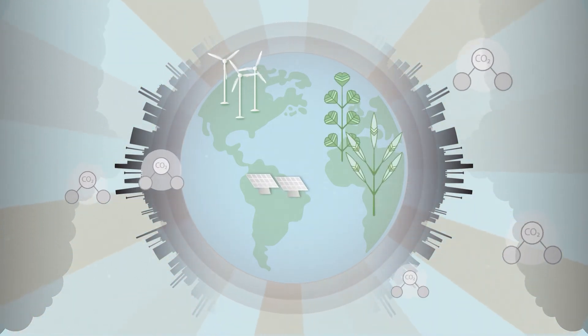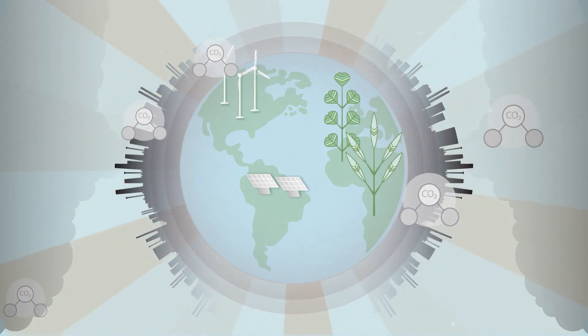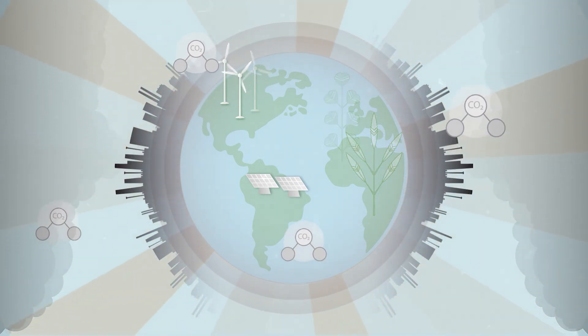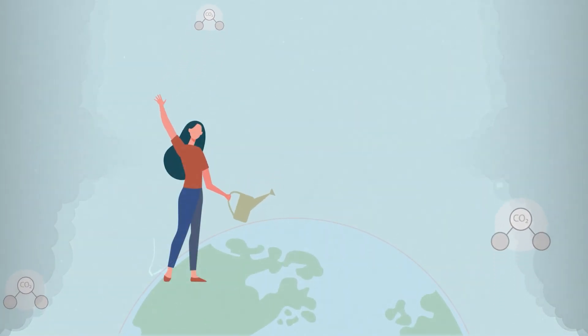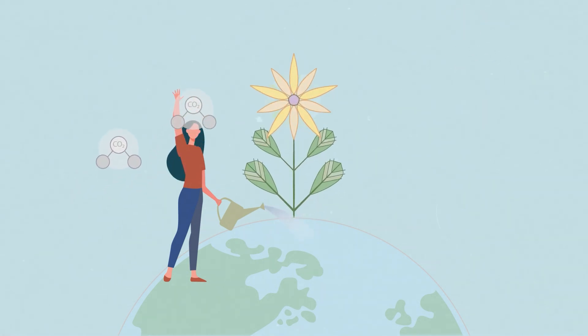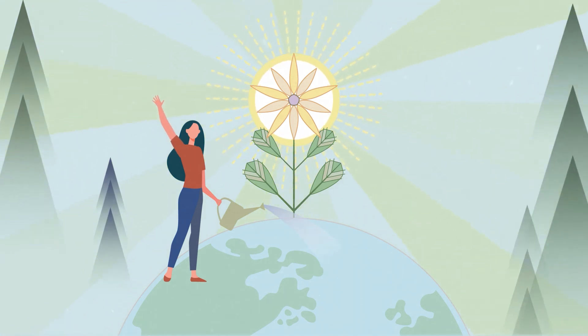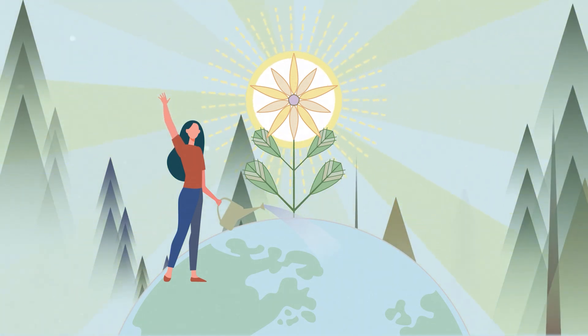Right now, almost one-quarter of our heat-trapping gas emissions come from agriculture and forestry. We have a real opportunity to make some changes and work with plants to do what they do best, absorb carbon dioxide. We can plant trees, protect forests, use cover crops in agriculture, and more.